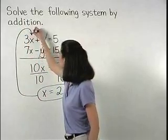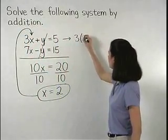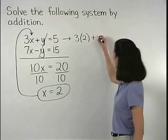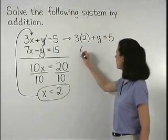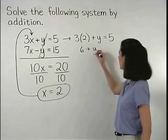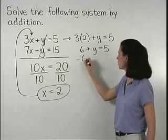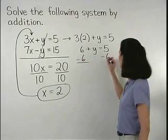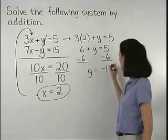this gives us 3 times 2 plus y equals 5 which simplifies to 6 plus y equals 5. And subtracting 6 from both sides, we find that y equals negative 1.